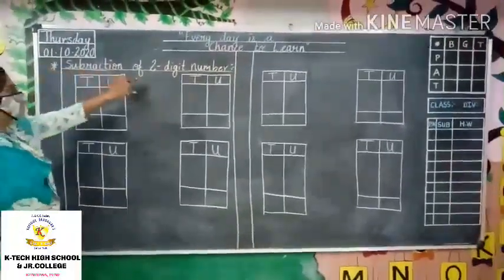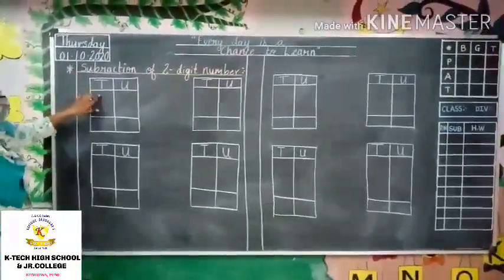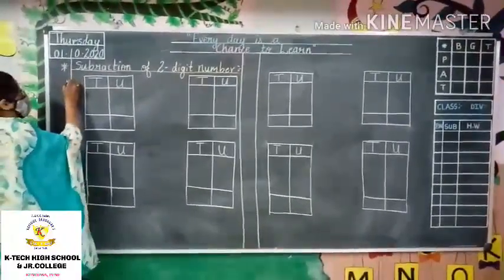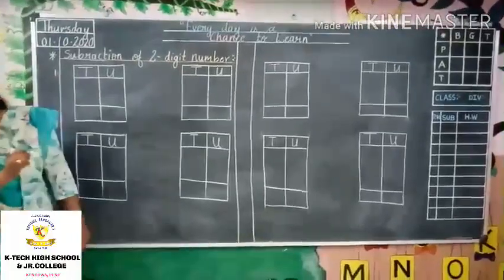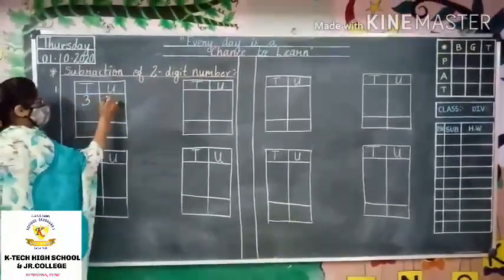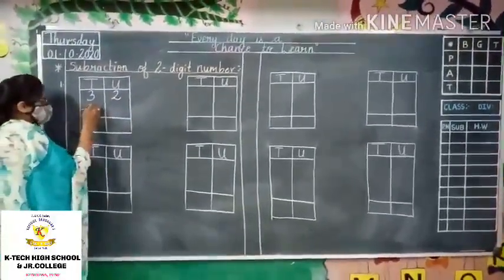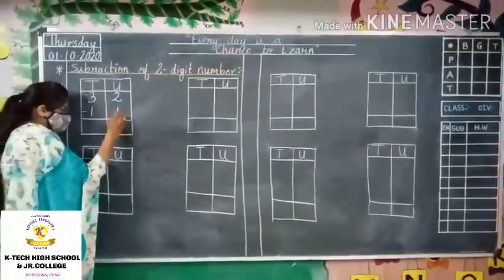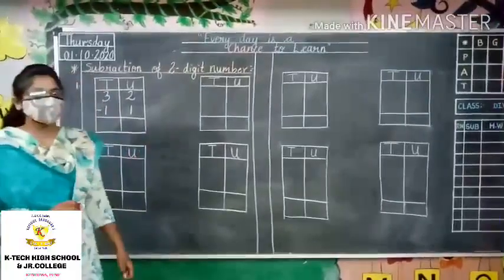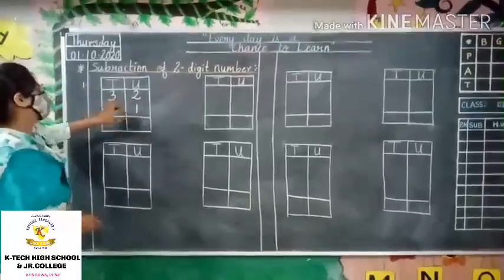Today we will start with subtraction of two-digit numbers — tens and units calculation. Question number one: 32 minus 11. Always keep in mind while subtracting, start with units.